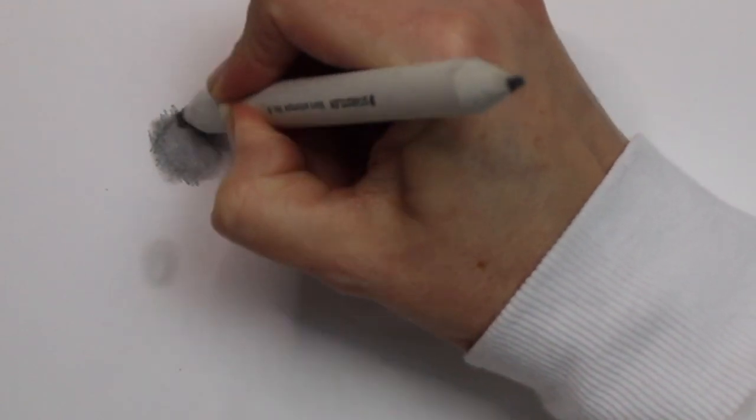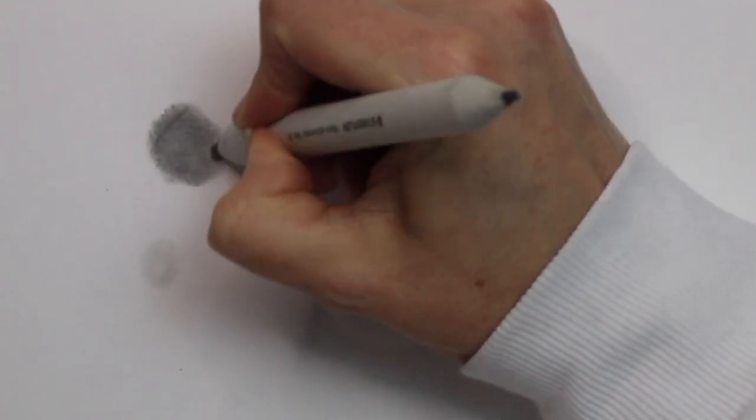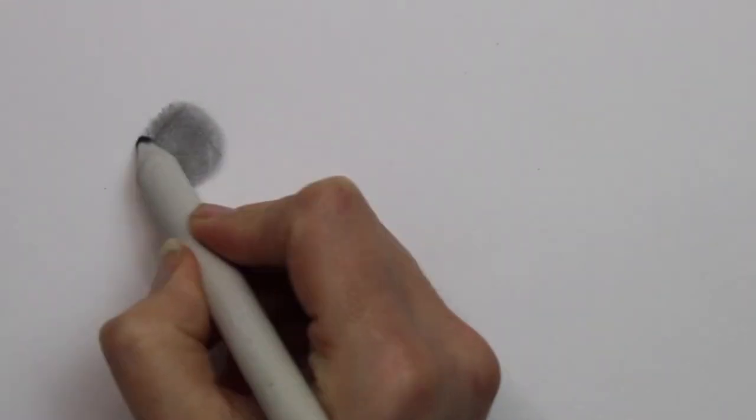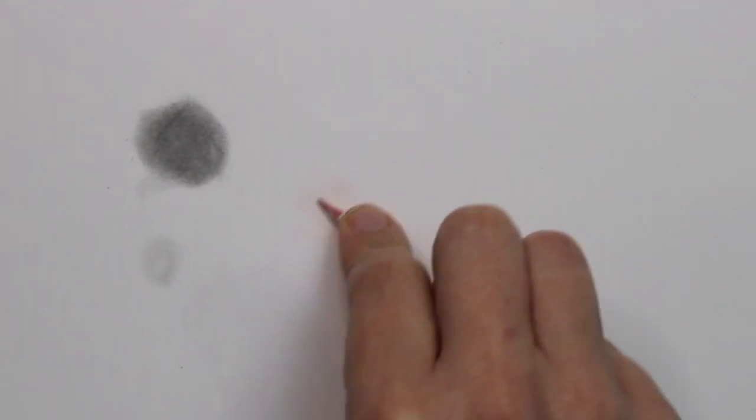...when the blending stump becomes blunt it doesn't blend that well. I've just done some cross-hatching and you can see it hasn't blended the pencil entirely. That's one thing to mention when you're using your blending stump.